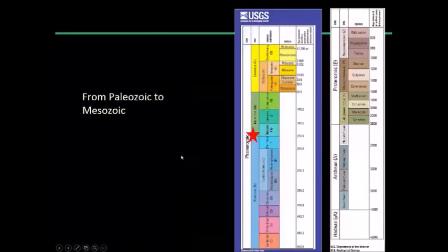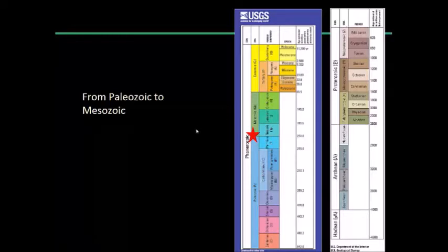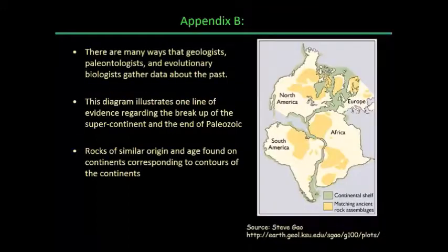Here we are in our timeline. We've made a lot of progress — we're now all the way over here at the beginning of the Mesozoic, this green rectangle here representing the Mesozoic. There are three periods in there: the Triassic, Jurassic, and the Cretaceous. We're not going to spend a lot of time on the details, just cherry-pick the most interesting things that happened during this time period.